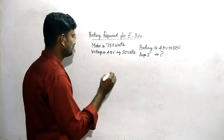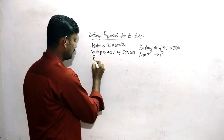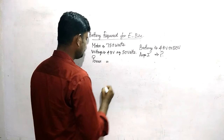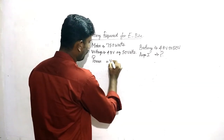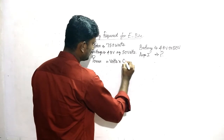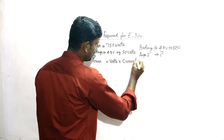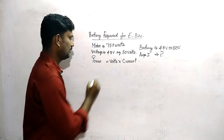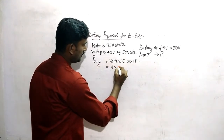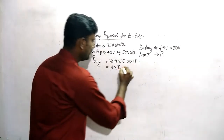I will tell you. A simple concept is: Power equals volts into current. P equals V into I. This is the basic formula.